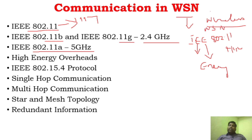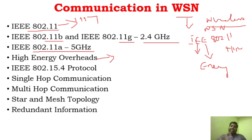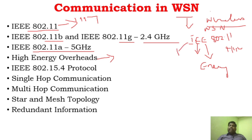Irrespective of all the advantages — high data rate and huge bandwidth — the very important disadvantage of IEEE 802.11 is that it increases high energy overhead. Because of huge bandwidth and high data rate, the energy consumption will be very high. Energy consumption is the most critical challenge in wireless sensor networks. So practically speaking, we will not be able to implement IEEE 802.11 in WSN.